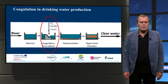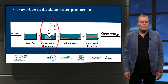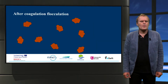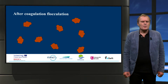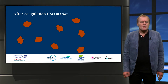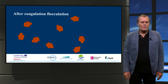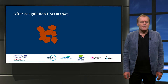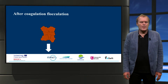During coagulation, chemicals are dosed — such as iron or aluminum salts — in order to produce flocs. During coagulation, small flocs are formed. After this, flocculation is necessary to produce flocs that are big enough to settle.